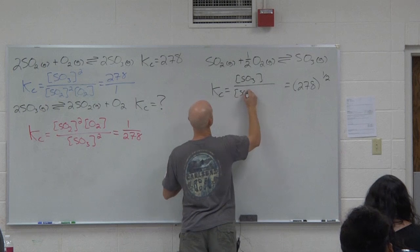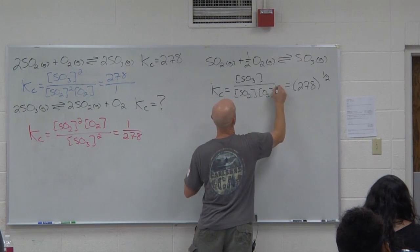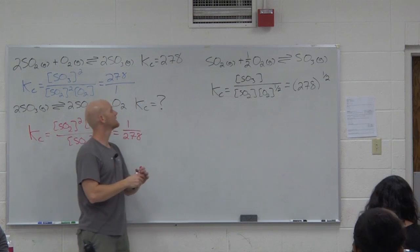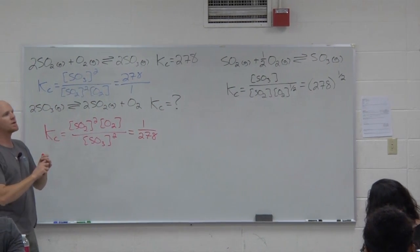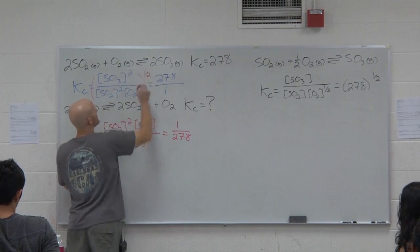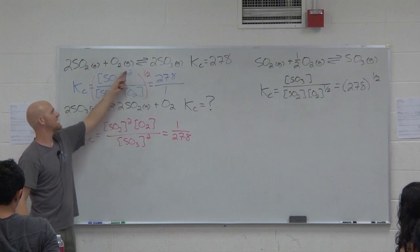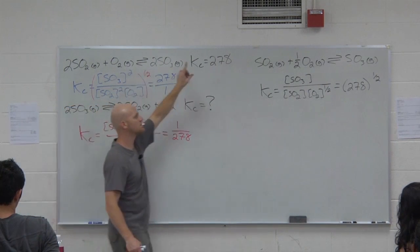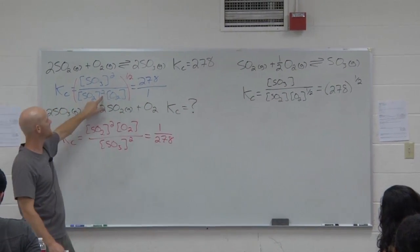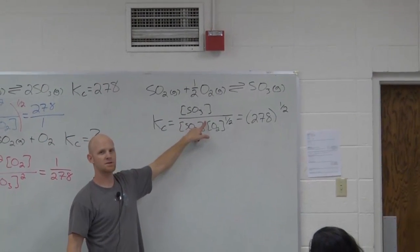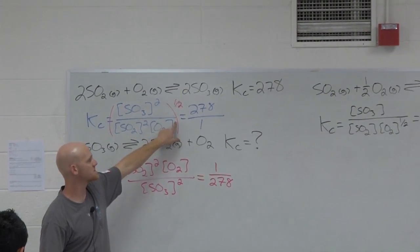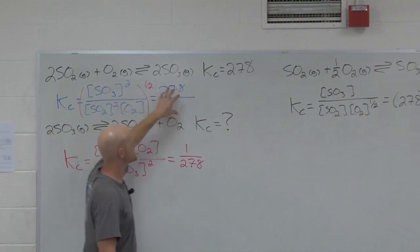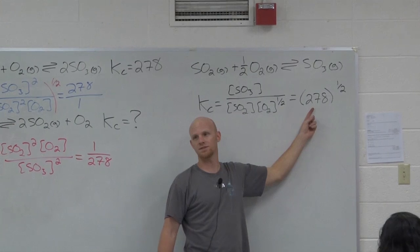And if you look here, going back to the original expression, if I were to take this entire expression to the one half power, what is a one half power to the exponents inside? It multiplies them all by one half. So instead of being to the second power, after factoring that in, it would be to the first power. That one, instead of being squared, would also, factoring that in, be to the first power. And where O2 was, you know, had an exponent of one, well, now it would be one half. And so if everything in here equals 278, well, square rooting it gets me this expression. And so it's equal to the square root of 278, or 278 to the one half power.